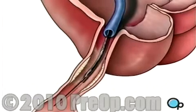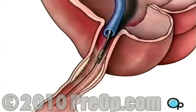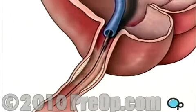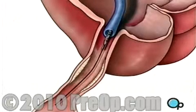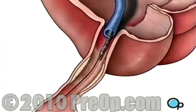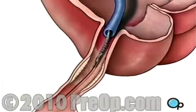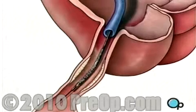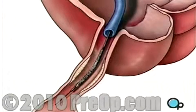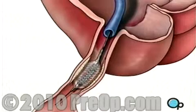The balloon catheter is then withdrawn and another balloon catheter is inserted. This balloon has the mesh stent tube wrapped around it. Once this tube has been placed in the center of the now-widened area of the artery, the balloon is briefly inflated. The stent expands until it hugs the walls of the artery.